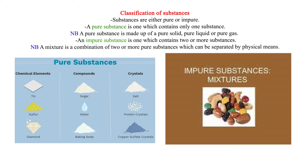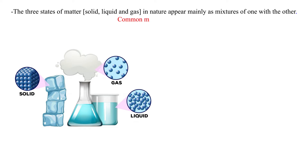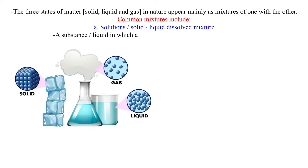The three states of matter — solid, liquid, and gas — in nature appear mainly as mixtures of one with the other. Common mixtures include solutions, which are solid-liquid dissolved mixtures. The substance or liquid in which another substance dissolves is called the solvent.